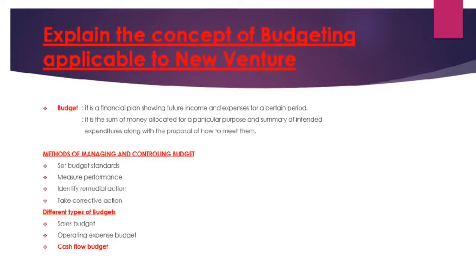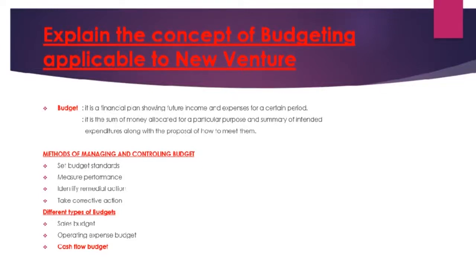Number one, you need to set the budget standard — how much are you willing to spend or how much are we expecting as a business? Number two, you measure the performance: after setting up all the expenses, you check if you are going to have money at the end and how much you are spending on each expense. Number three, we identify the remedial action — you check where you can make changes. And lastly, you take the corrective action.